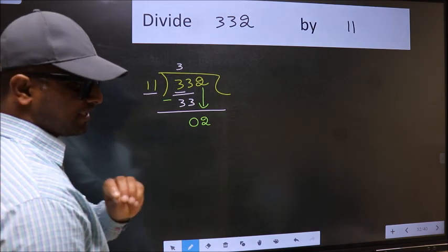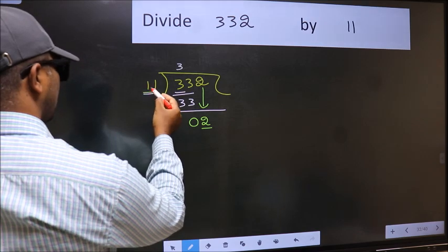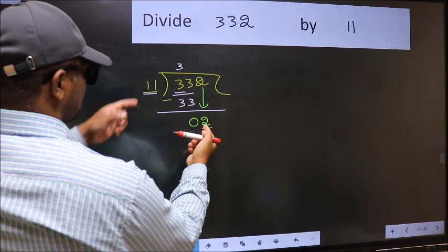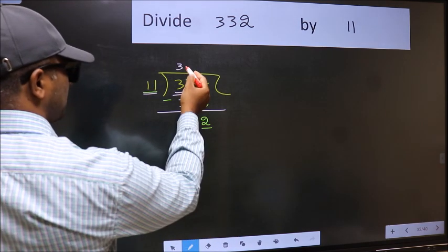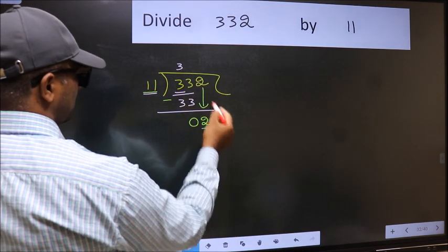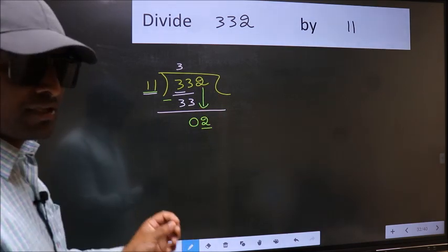And the mistake is this. Here we have 2 and here 11. 2 is smaller than 11. So what many do is they directly put dot and take 0. Which is wrong.